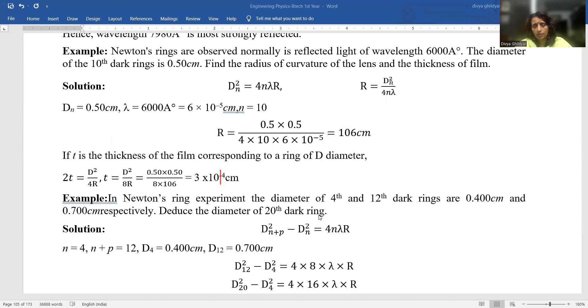Find the diameter of the 20th ring. From my formula for wavelength in Newton ring experiment, I get D²N+P - D²N = 4NλR. N is 4, fourth dark ring. N+P is 12th dark ring.